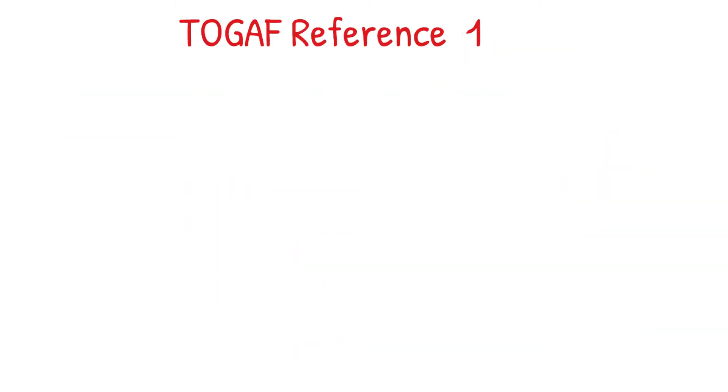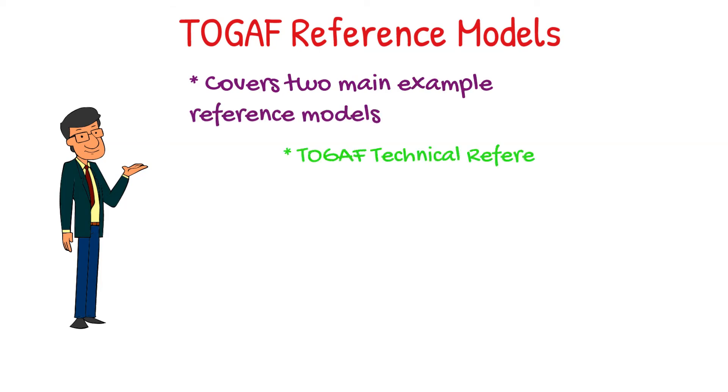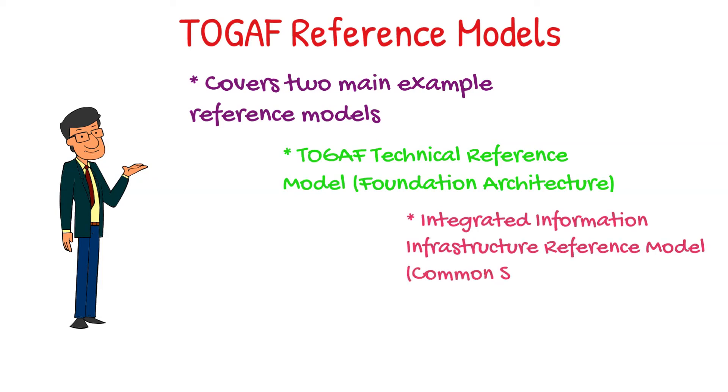TOGAF reference models are essentially samples of how we should build our architecture, and it covers two main reference models. The TOGAF technical reference model, which is considered a foundation architecture, and the integrated information infrastructure reference model, which is considered a common systems architecture.